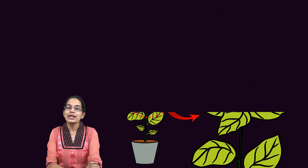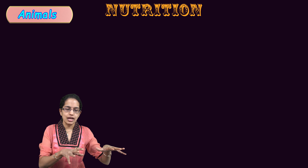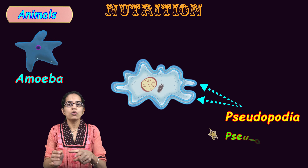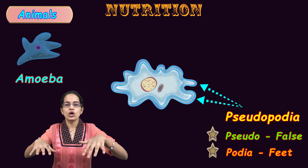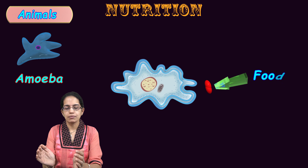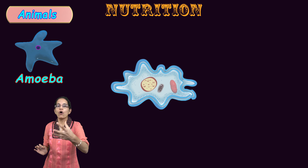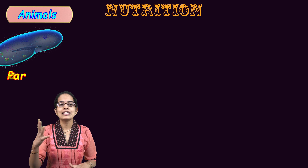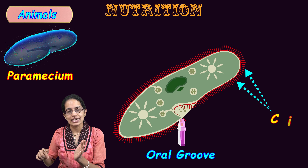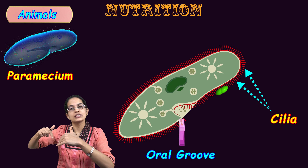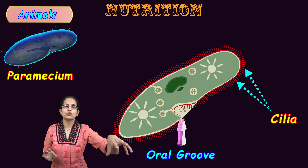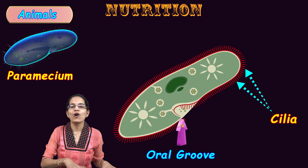Coming to nutrition in animals, let's first understand lower-order organisms. In the case of Amoeba, it has pseudopodia — 'pseudo' means false, 'podium' means leg — so Amoeba has a false leg. It changes its shape according to need, slowly engulfs food and digests it. In Paramecium, there is a groove along the body with small cilia that divert food particles toward the food groove, where they are engulfed.